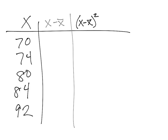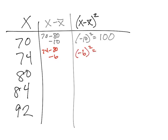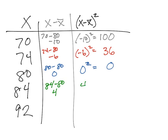Let's work through each row. For 70: 70 minus 80 equals negative 10 in column two; negative 10 squared equals 100 in column three. For 74: 74 minus 80 equals negative 6; negative 6 squared equals 36. For 80: 80 minus 80 equals 0; 0 squared is 0. For 84: 84 minus 80 equals 4; 4 squared equals 16. For 92: 92 minus 80 equals 12; 12 squared equals 144.